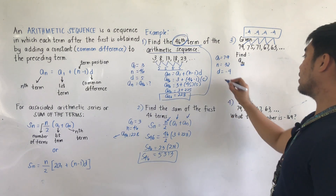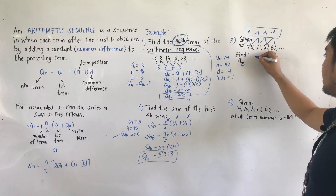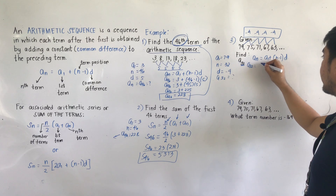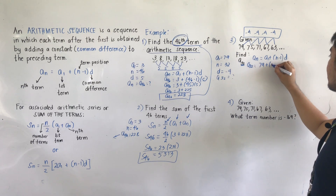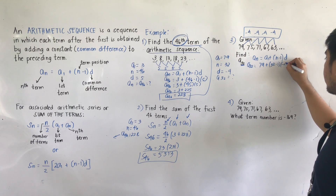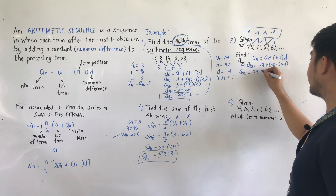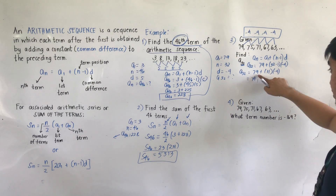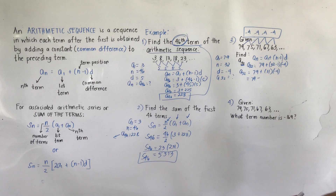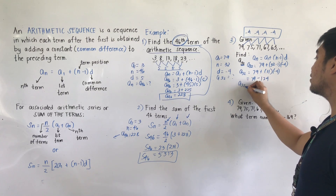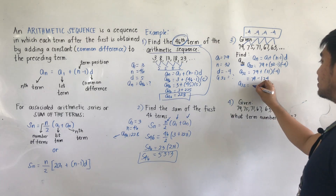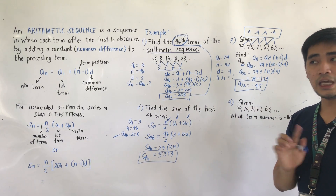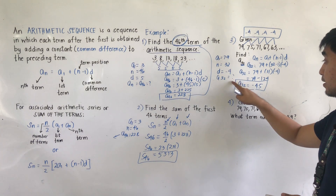Using the formula: a_32 = 79 + (32 − 1) × (−4) = 79 + 31 × (−4) = 79 + (−124) = 79 − 124 = −45. Therefore the 32nd term is −45.